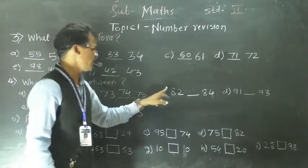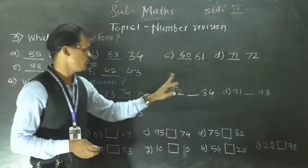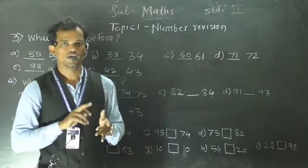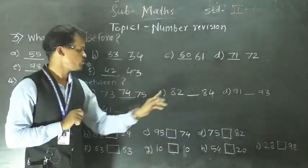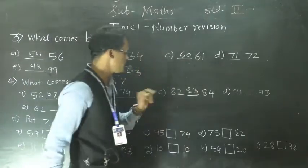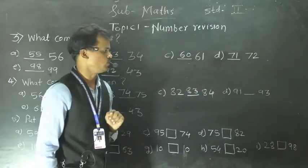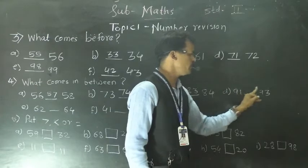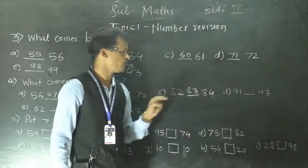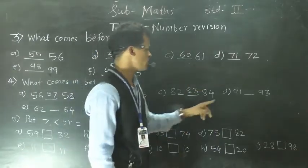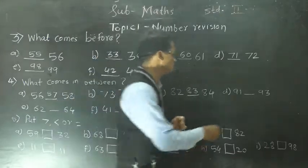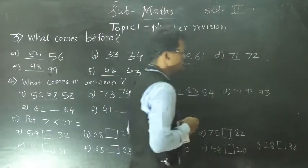Next: see, 82 and 84. In between these two numbers — see the number series: 81, 82, 83, 84. So in between these two numbers, 83 comes. So it completes: 82, 83, 84. Next: 91 and 93 are given, and we have to find the middle number. Series is 91, 92, 93. So in between these two numbers, 92 comes.